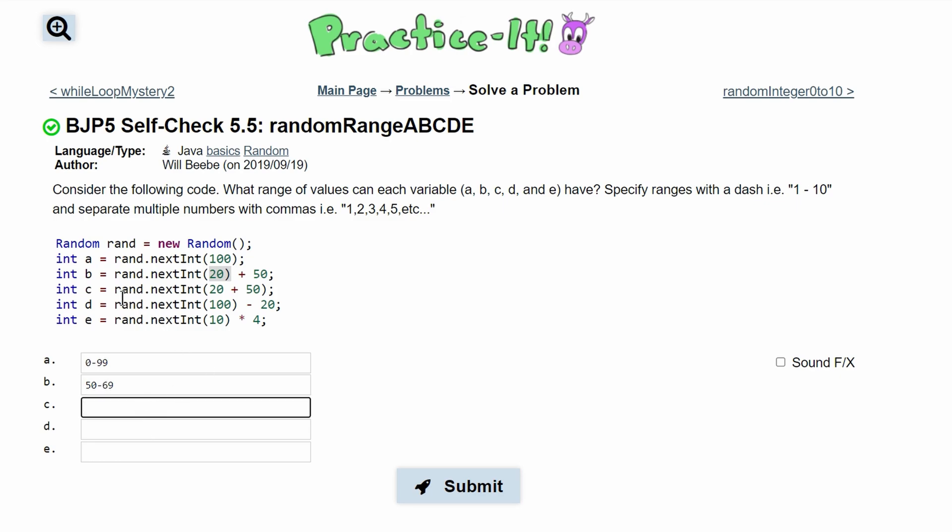For C, since we have nothing outside of here like this 50, we're automatically going to start at zero, and then we're just going to look inside of here. We have 20 plus 50 which is 70. So we're going to go to 70 but not touch it, so we're going to stop at 69. So we have zero to 69.